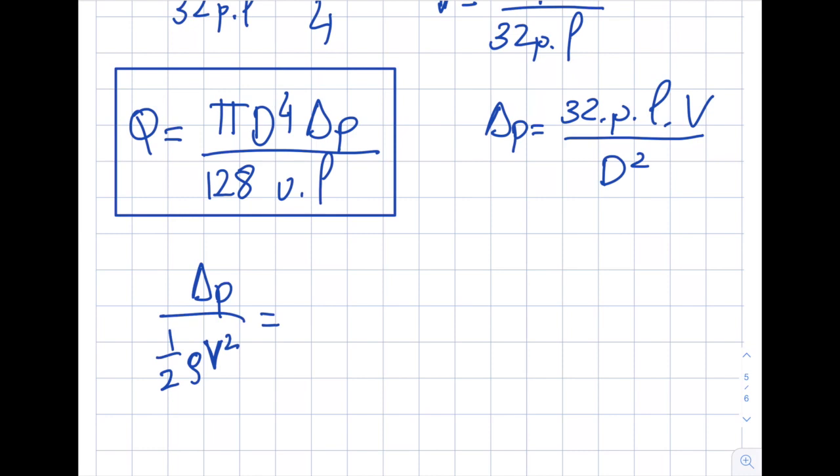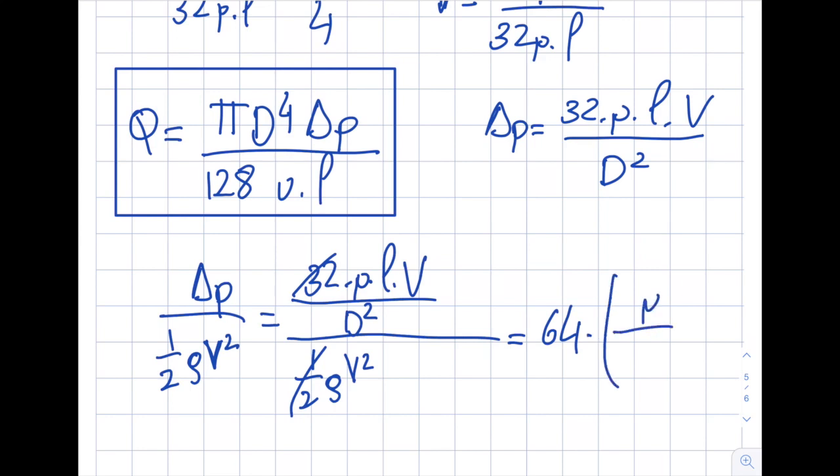And from here, you will see that I'm going to get 32 times viscosity times l times v divided by d squared divided by 1 half rho v squared. I want to write this in a specific way. So I can write here 64, so basically 32 divided by 1 half is 32 times 2, which is 64. Next, what I want to write here is I want to write this way: viscosity, rho v d.